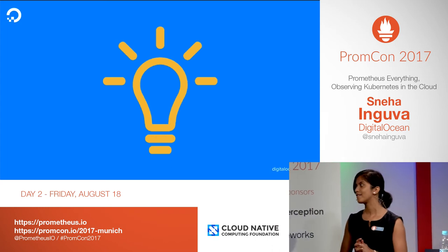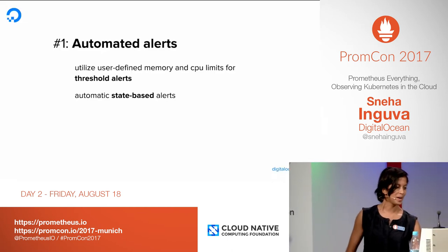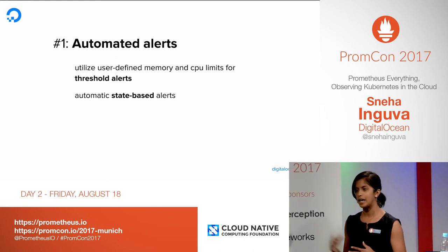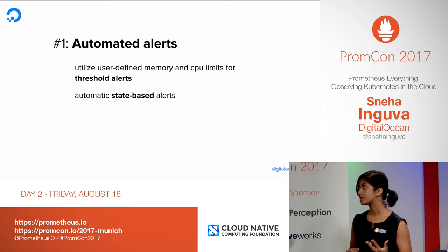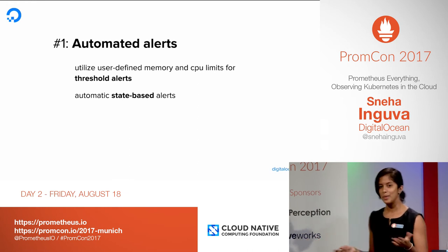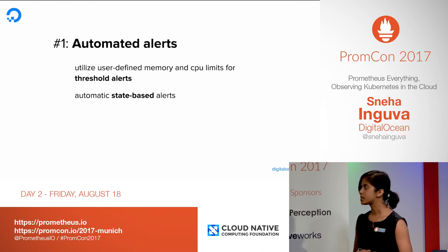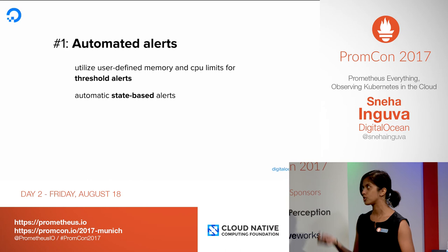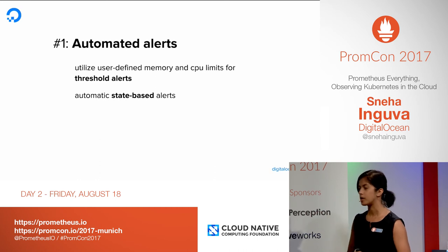My pie-in-the-sky ideas are the stuff that keeps me up at night. First: automated alerts. I still feel like we could do better and have way more threshold alerts on our services. Something I thought about was taking away some of the burden by checking the memory and CPU limits that users have to define in their manifest file — our DOCC manifest requires users to define resource limits — and just leveraging those CPU limits to automatically set up threshold alerts based on that. I also thought about automatic state-based alerts, but that would be a little harder than simply grabbing information from the declarative manifest file.